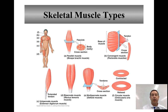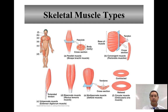In this video we're going to talk about the different types of skeletal muscles as well as some of the factors that are used in naming skeletal muscles. The first type of skeletal muscle is called a parallel muscle, where the fascicles — the bundles of muscle fibers — are parallel to the long axis. The bicep brachii in your arm is an example.